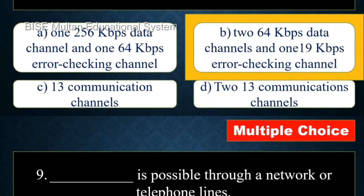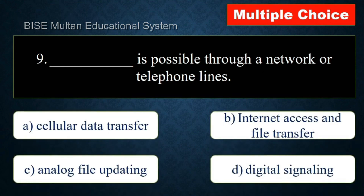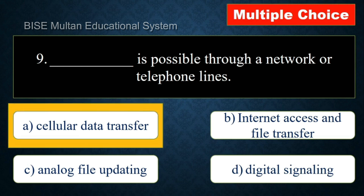Question number 9: Dash is possible through a network or telephone lines. The answer is cellular data transfer.